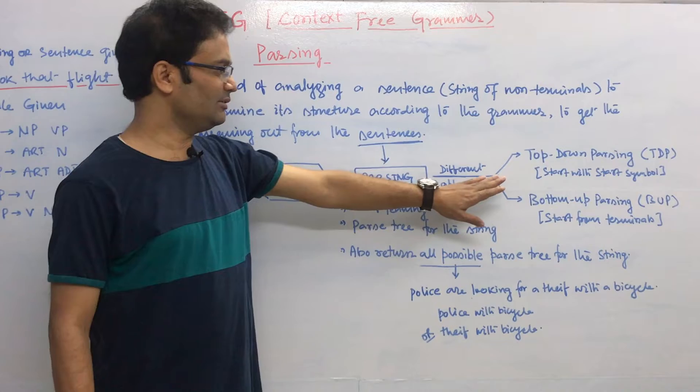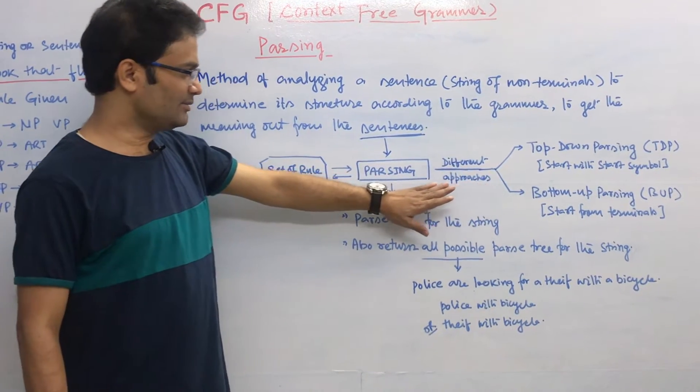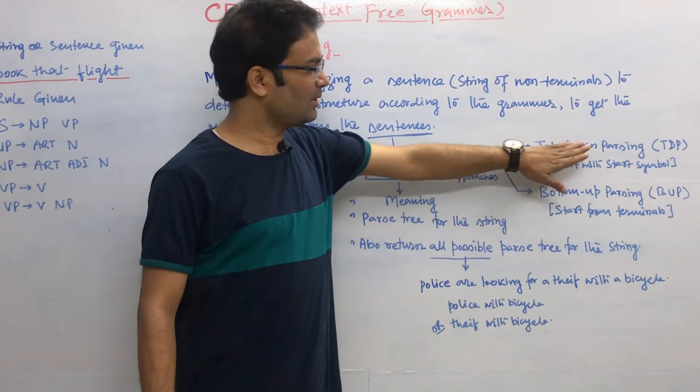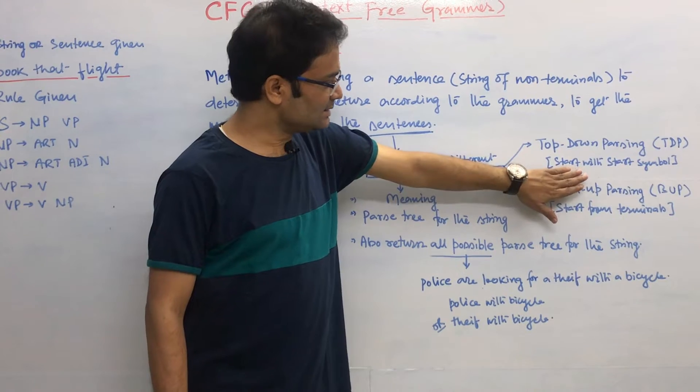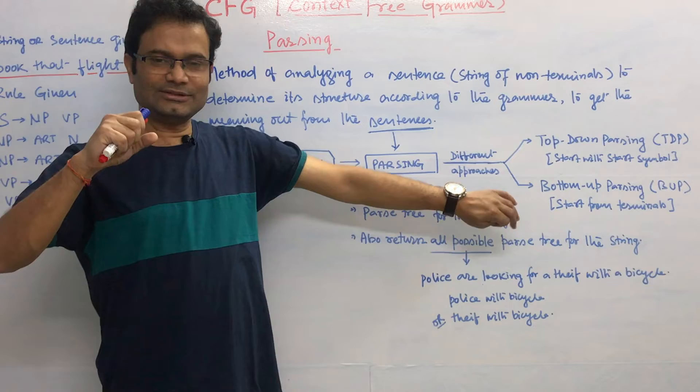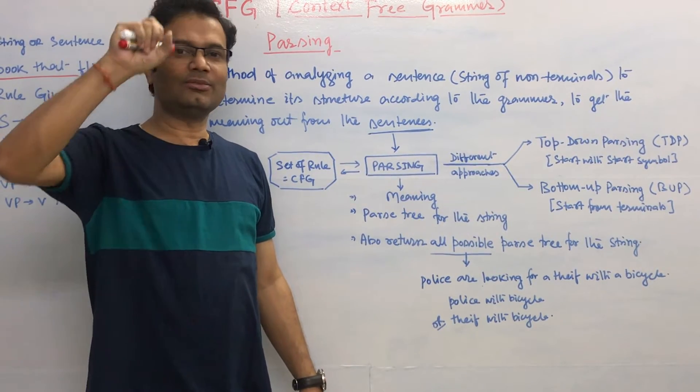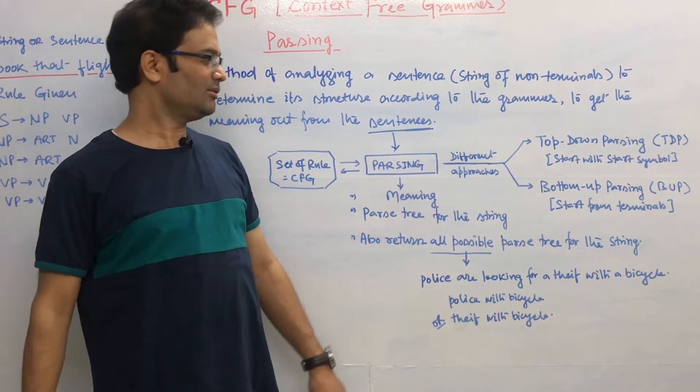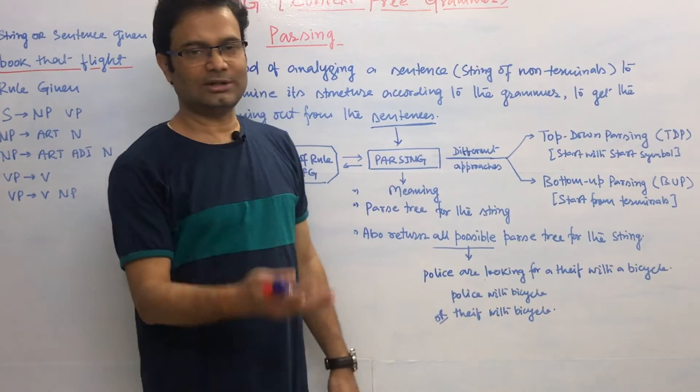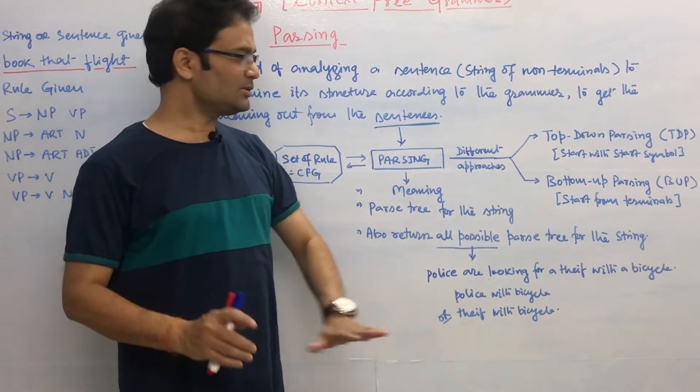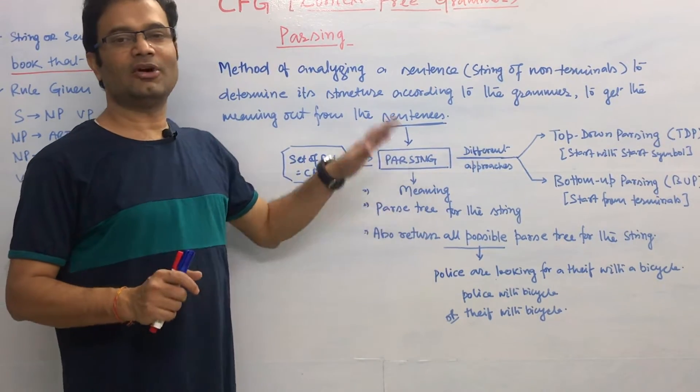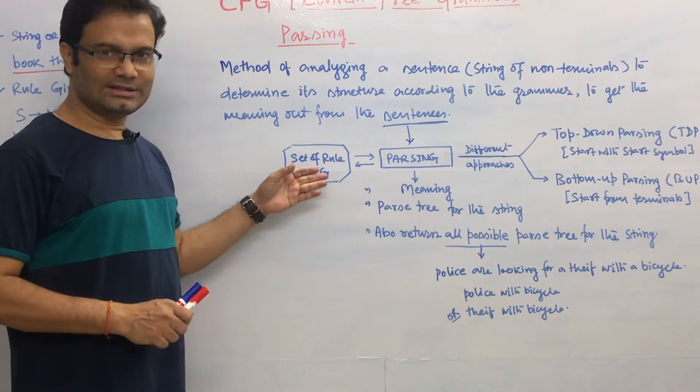There are many approaches in NLP for the parsing, but we are going to discuss the two important parsing techniques here. One is the top-down parsing that is called the TDP and that starts from the start symbol. If you watch my previous video of the CFG, I have given what is the starting symbol, what is the terminal, what is the non-terminal. And when you use the bottom-up parsing that is called the BUP, we will start from the terminal. But the purpose of both approaches would be the same. We have to find out the parse tree from the given sentence with the help of the CFG.